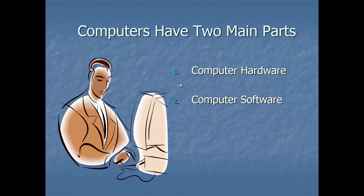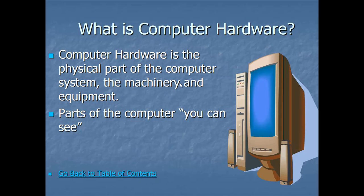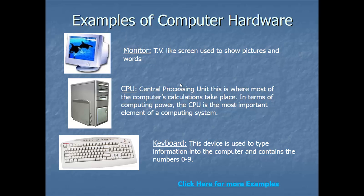When working with a computer, there are two key terms: computer hardware and computer software. Hardware refers to devices or parts you can see, feel, and touch — just like the human body. The human body itself is the hardware. Computer monitor, CPU, mouse, and keyboard are all hardware. Software is like the life inside the human body — without it, the hardware cannot do anything.